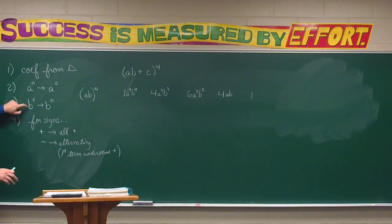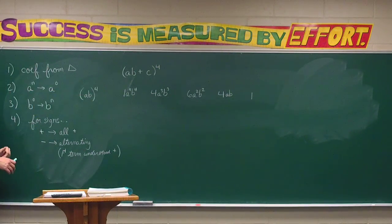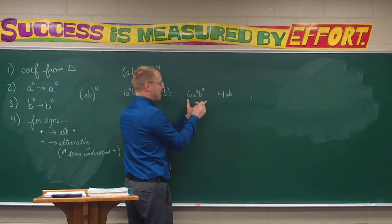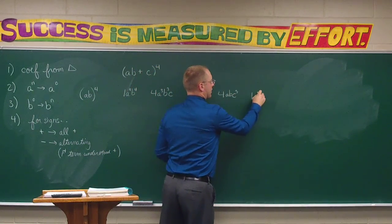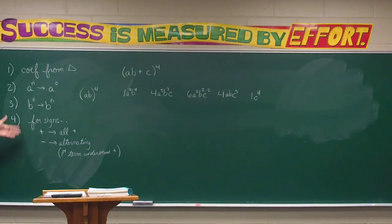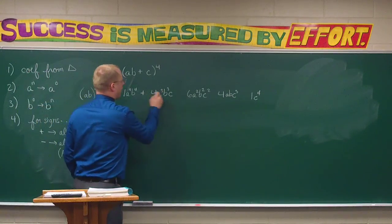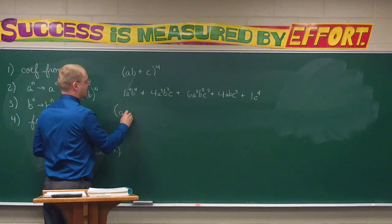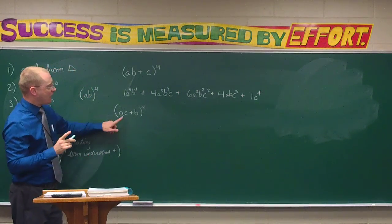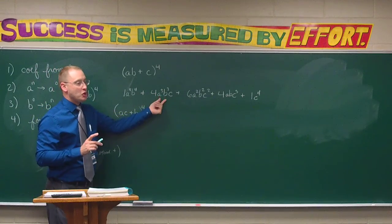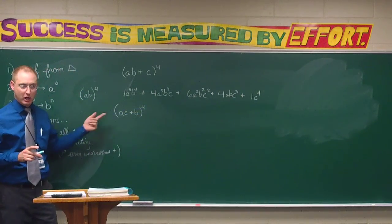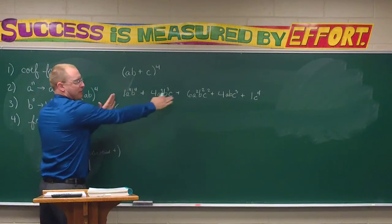Then C is my second term — it starts out gone, then grows: C to the first, C squared, C cubed, and finally C to the fourth. What are my signs going to be? All positives, since the binomial is positive. One word of caution: if this said AC plus B to the fourth, alphabetical order could cause a problem — you'd get A cubed B C cubed, which mixes things up. So that's something to watch for.